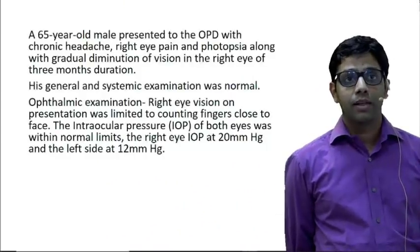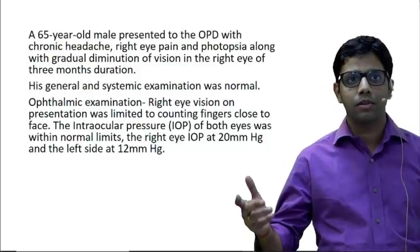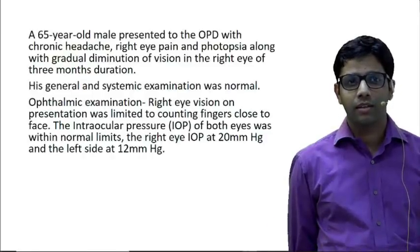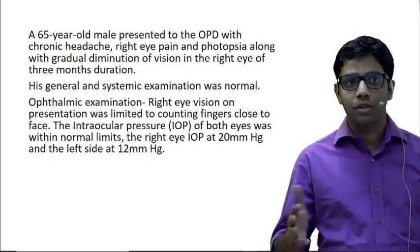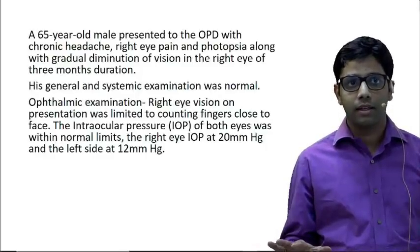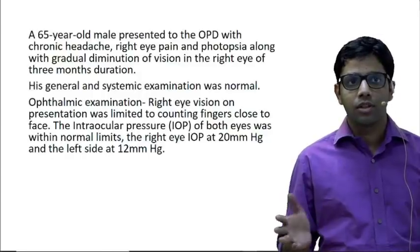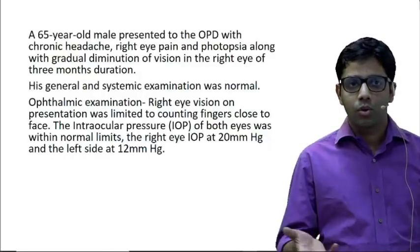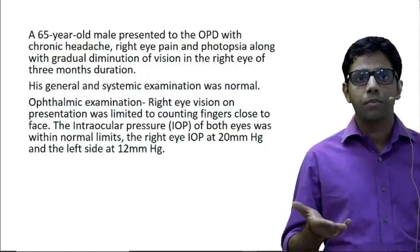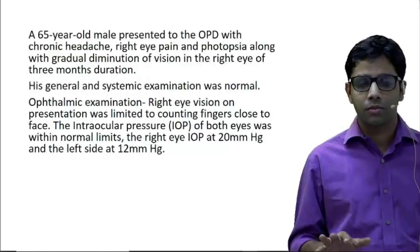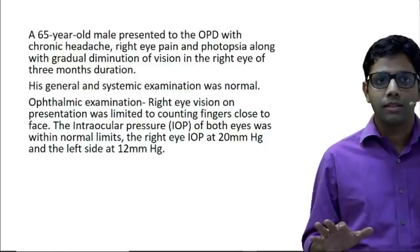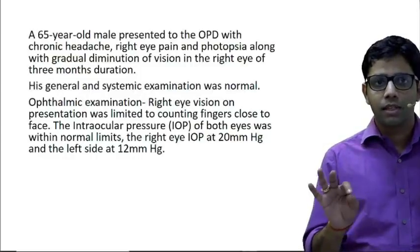Hello friends. We'll discuss an ophthalmological case. This is a 65-year-old male presenting to the OPD with history of chronic headache, right eye pain, photopsia — which means flashes in front of the eye — along with gradual diminution of vision in the right eye of three months duration. General and systemic examination was normal. On ophthalmological examination, visual acuity of the right eye was counting fingers close to face — very decreased. Intraocular pressure of the right eye was 20 mmHg, left eye was 12 mmHg.